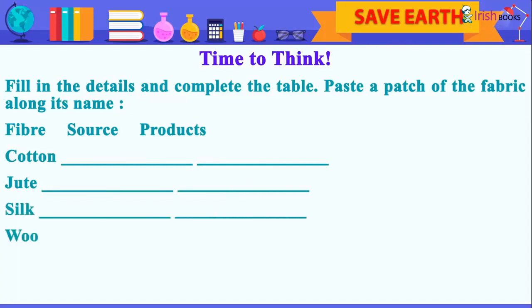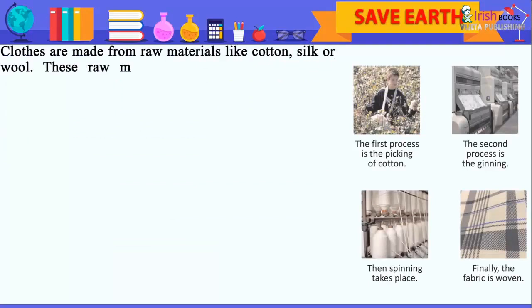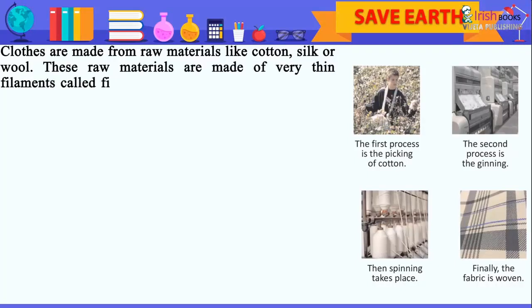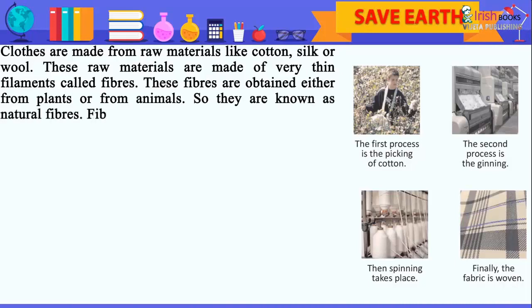Cotton, jute, silk, wool. Clothes are made from raw materials like cotton, silk or wool. These raw materials are made of very thin filaments called fibers. These fibers are obtained either from plants or from animals, so they are known as natural fibers.